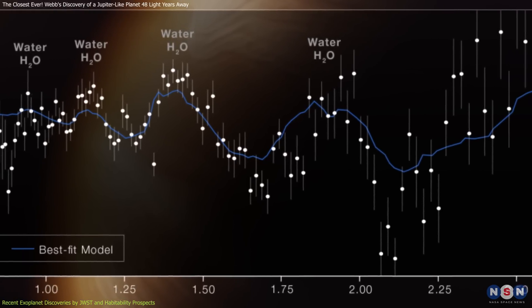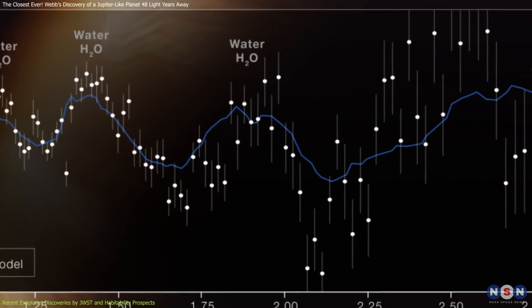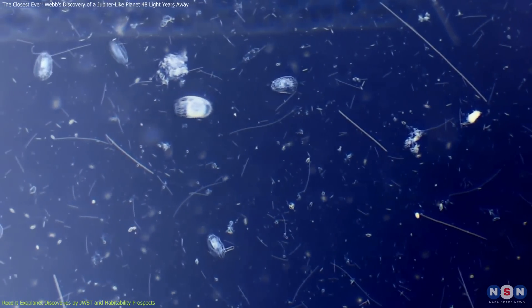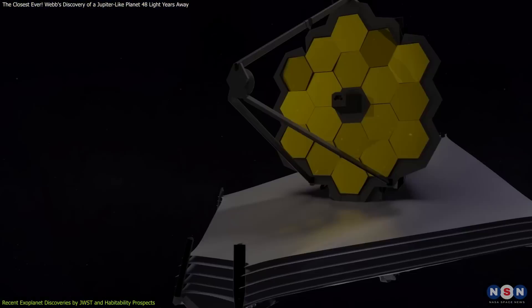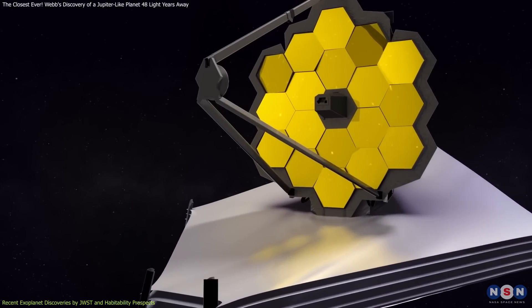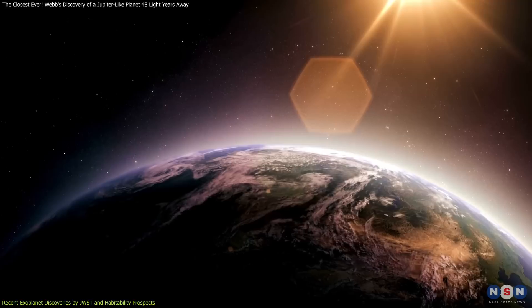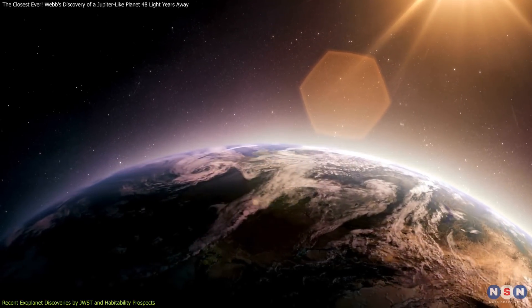Water vapor not only plays a critical role in determining the greenhouse gas balance, but is also essential for life as we know it. The ability of Webb to identify and analyze such components at great distances offers hope for finding Earth-like conditions elsewhere in the universe.